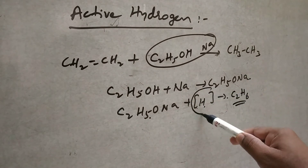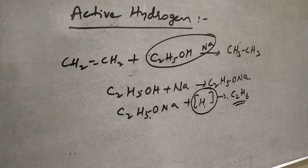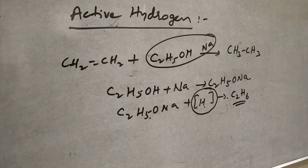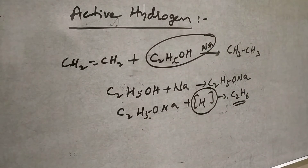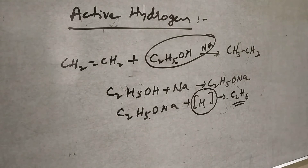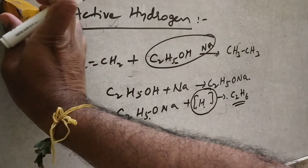This activates the reaction. That is why this reduction is very, very fast. Active Hydrogen plays a major role in the reaction. So, the difference between Nascent Hydrogen, Active Hydrogen, and Atomic Hydrogen has been explained. Please like, share, and subscribe. Thank you.